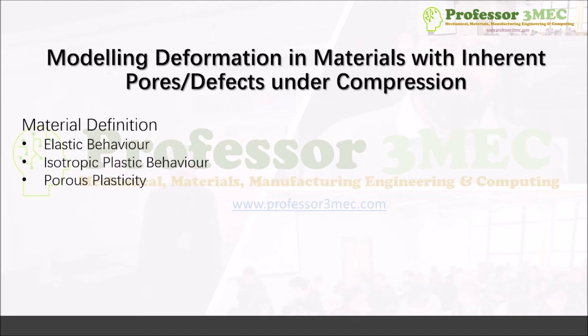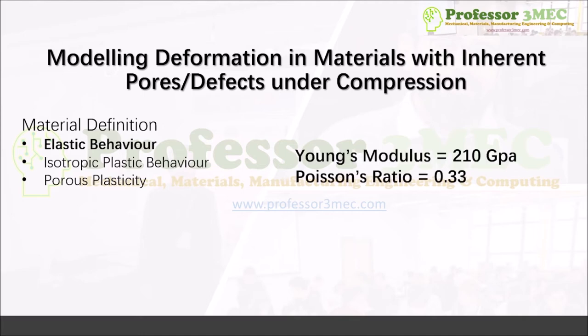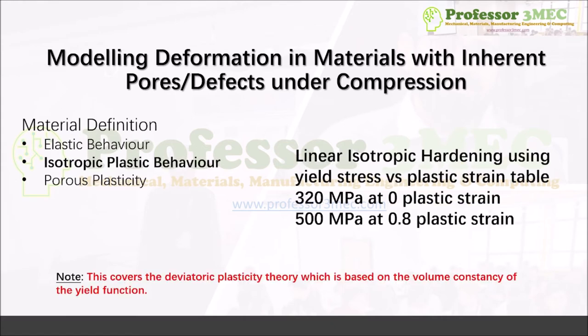For elastic behavior, we use linear isotropic elasticity, so we only need Young's modulus and Poisson's ratio. I'm going to use values for steel — my favorite material — but you can use your own material definition as well.